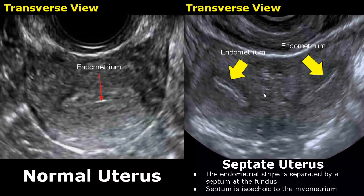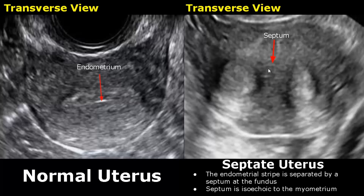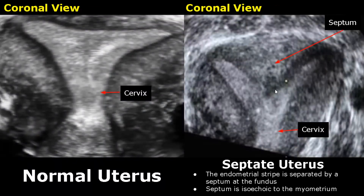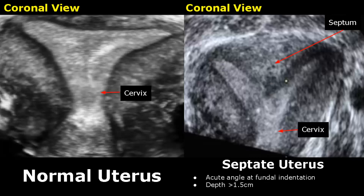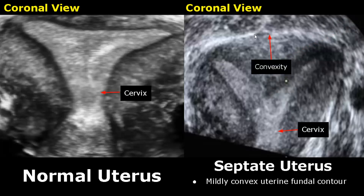In a septate uterus, the endometrial stripe is separated by a septum at the fundus. This is the septum in transverse view — you can see that it has divided the endometrial stripe. This septum is isoechoic to the myometrium. Here is another transverse image of a septate uterus; an isoechoic septum is seen separating the endometrium. In coronal view, we can see a thick isoechoic septum in the middle of the uterine cavity. There will be an acute angle formed at the fundal endometrium, and the depth of this indentation will be greater than 1.5 centimeters. The uterine fundal contour is convex-shaped here, but it can be flat as well.